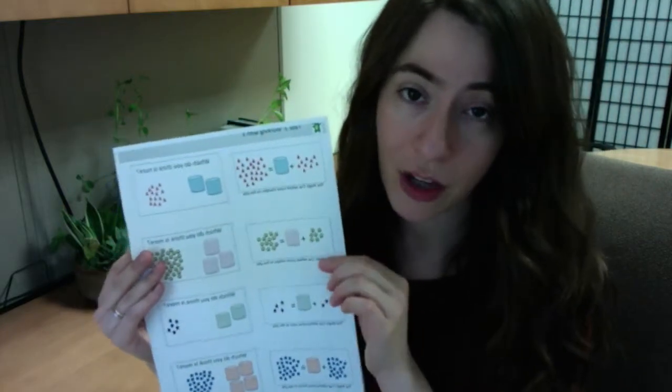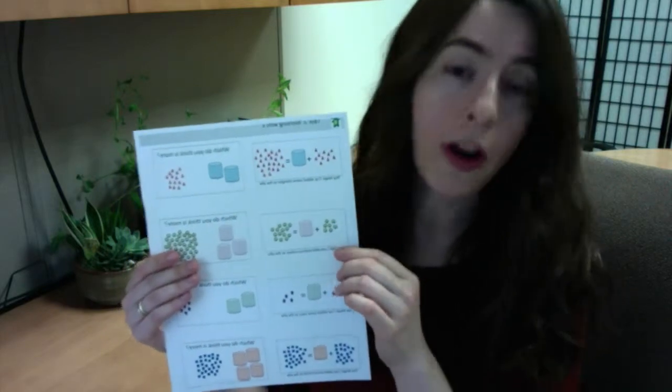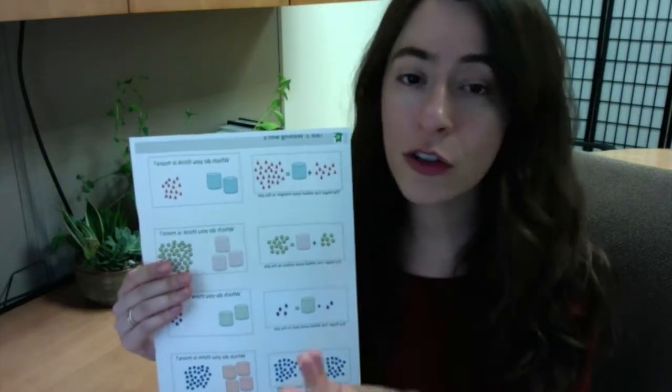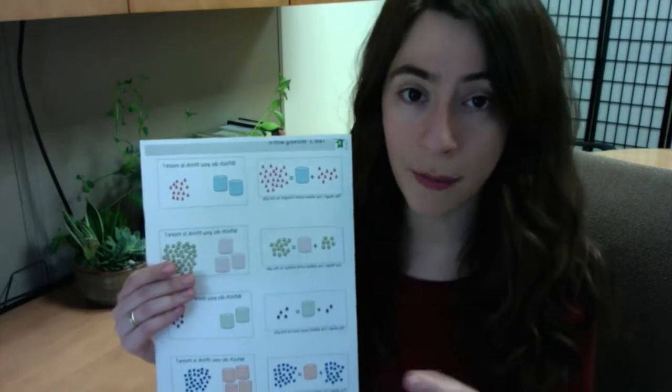Now if you printed this page, you can ask your child to circle the one that thinks is more. If you are looking at it on a computer screen, you can just have them point and make sure you record their response on your extra piece of paper.